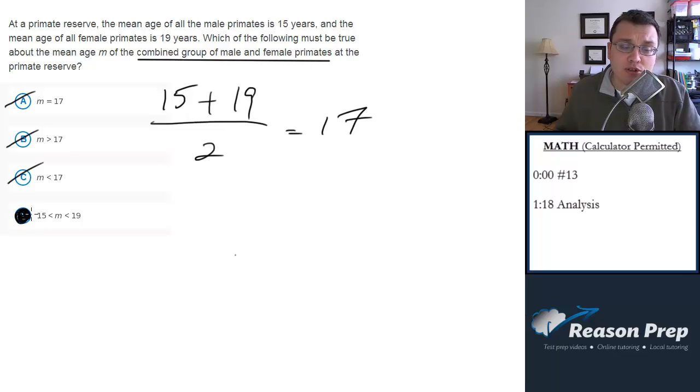So all we can say, though, is that it's going to be between 15 and 19. It's not going to go any lower than 15, because the average age of the males is 15, and it's not going to go higher than 19, because the average age of the females is 19, but we know we're going to be within that range. So the answer to this one is D.